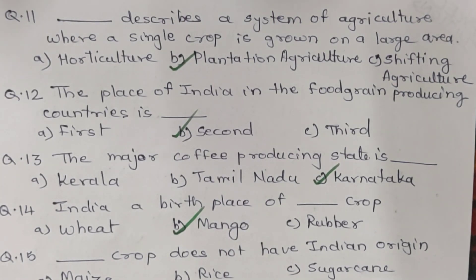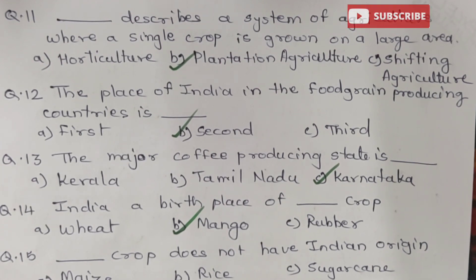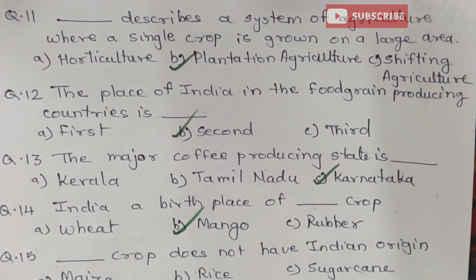Question 12. What is the place of India among food grain producing countries? Options are A. First. B. Second. C. Third. And the correct option is B. Second.